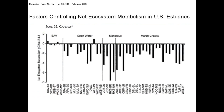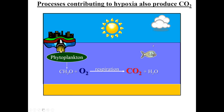A study by Caffrey in Estuaries from 2004 illustrates this nicely. It looked at the ecosystem metabolism of 44 estuaries across the U.S. and showed that, if you exclude those dominated by submerged aquatic vegetation, almost all other estuaries are net heterotrophic — that is, annually they're consuming oxygen, not producing it. This is most extensive in estuaries dominated by marshes or mangroves. And of course, that process of respiration is producing CO2, therefore leading to acidification.